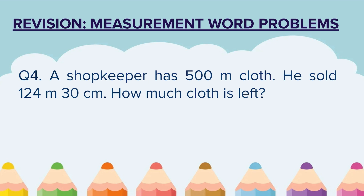Question 4. A shopkeeper has 500 meters of cloth. He sold 124 meters 30 centimeters. How much cloth is left? The total amount of cloth with the shopkeeper is given, and out of that he has sold some portion. We have to find out how much is still left with him.